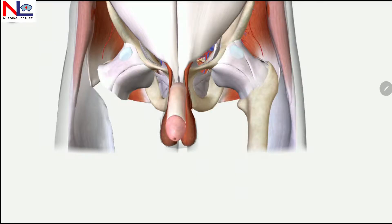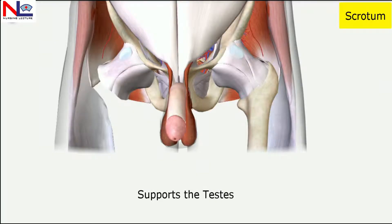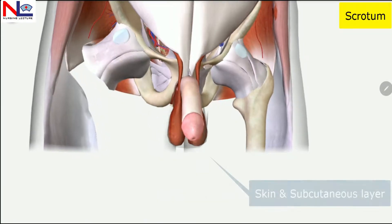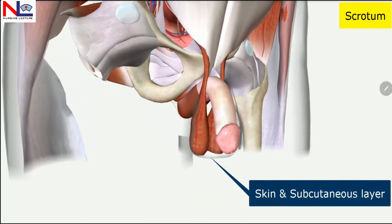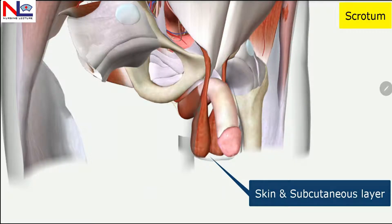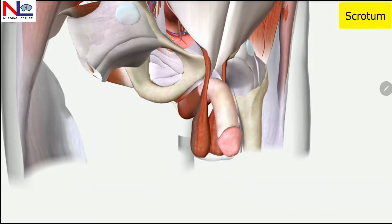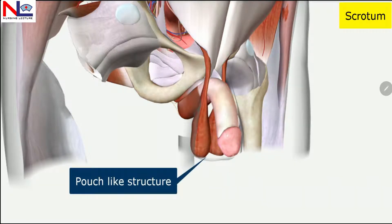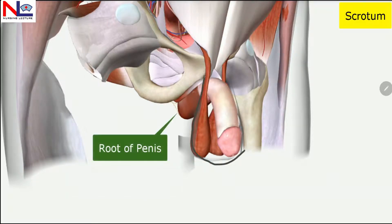First, I'll talk about the scrotum. It is a supportive structure which supports the testes, and it is formed by skin as well as a subcutaneous layer. Here you can see it is a pouch-like structure, and it attaches to the root of the penis.